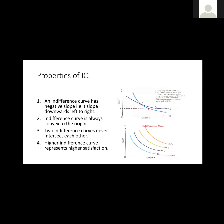A higher indifference curve represents higher satisfaction, as explained by the logic of monotonic preference, which means more utility. We always need something extra as a consumer — our satisfaction level always increases. The bundles on IC1 are fewer; on IC3 there will be more; on IC4 even more. So the amount of bundles increases our satisfaction.